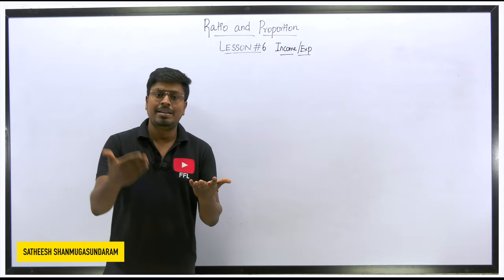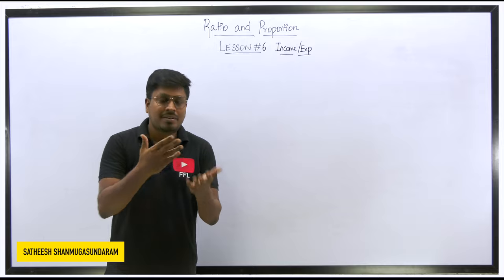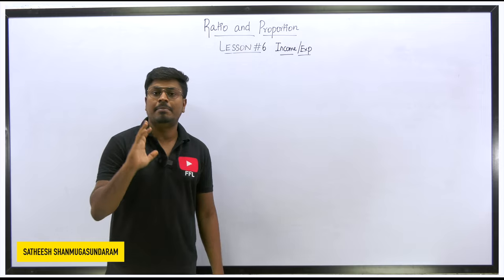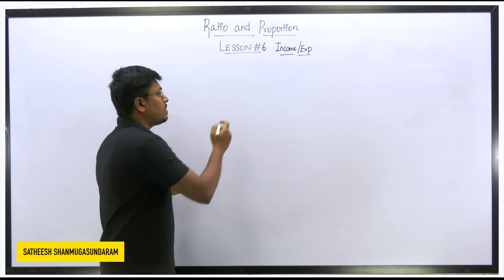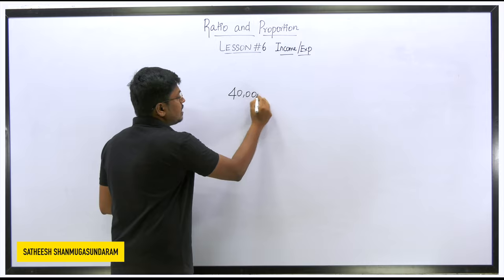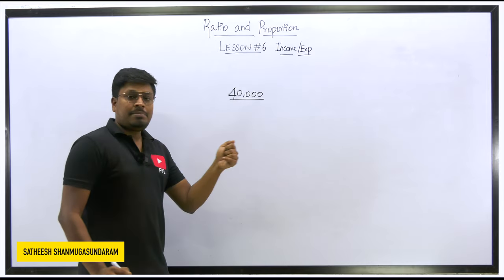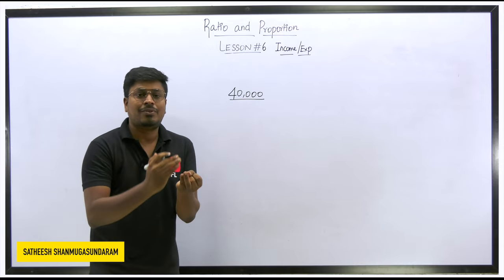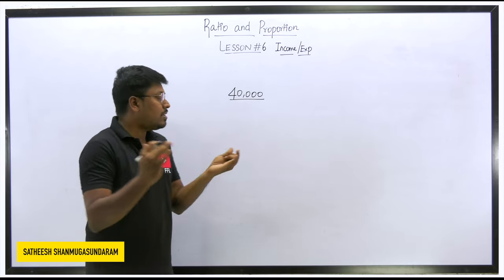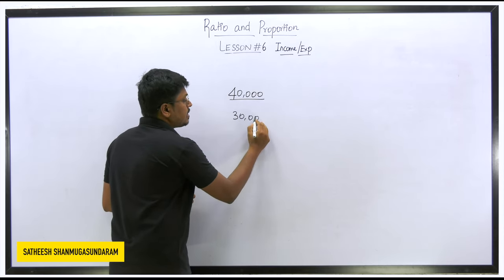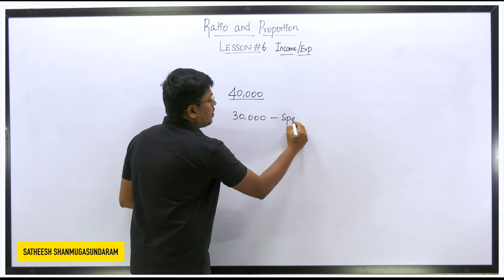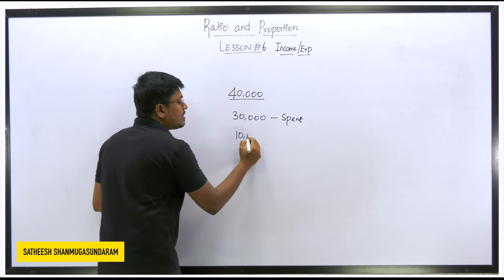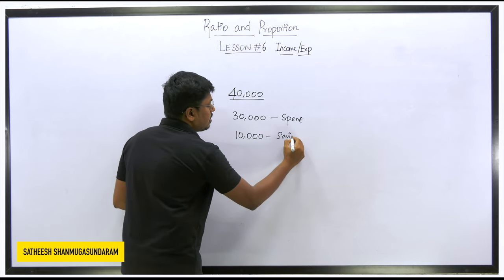This income, expenditure, and savings concept is something we face every day. For example, if my monthly YouTube income is 40,000, that is my income. From that 40,000, I spend 20,000 for rent and 10,000 for electricity and other bills — totaling 30,000 as expenditure. The remaining amount is my savings, which is 10,000.